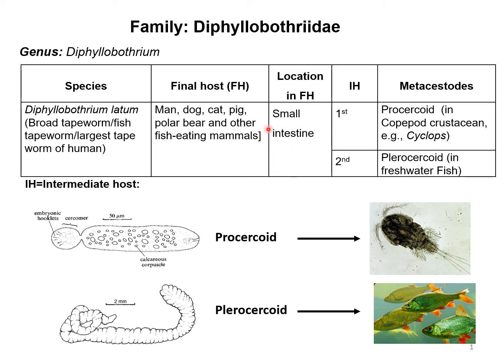This parasite lives in the small intestine of the final host. There are two intermediate hosts. The first one is a copepod crustacean, that is cyclops.